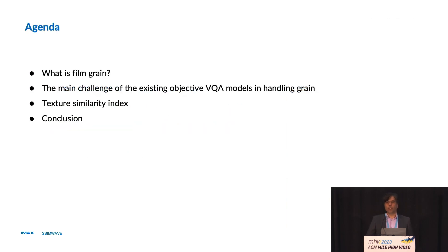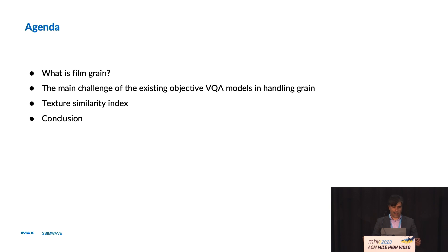Last year, we talked about the issues that film grain can introduce into video encoding platforms. And this year, we would like to introduce a new model that tries to address those issues. I will talk about what film grain is, then the main challenges — a repetition of what we did last year — and then we will introduce the texture similarity index, one of the initial attempts we recently made. You'll see some promising results, and then we'll go to the conclusion.